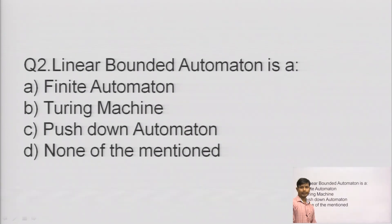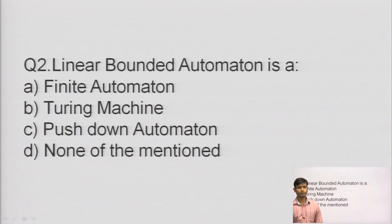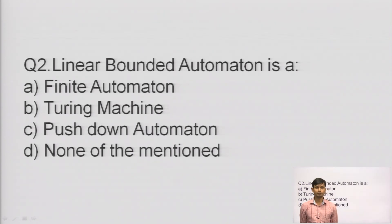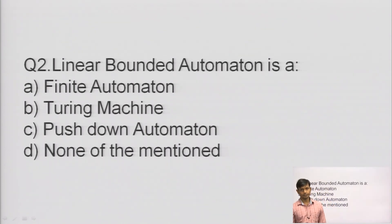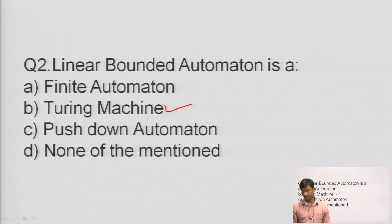Another question: the Linear Bounded Automata is which of the following — a finite automata, a Turing machine, a push down automata, or none? Linear Bounded Automata is not a finite automata, not a push down automata (because it accepts context-sensitive languages which PDA cannot accept). The correct answer is: Turing machine.